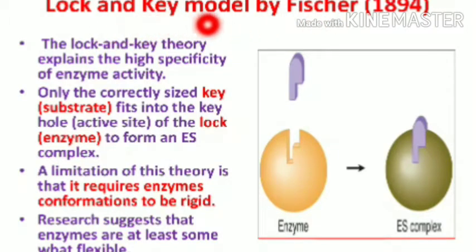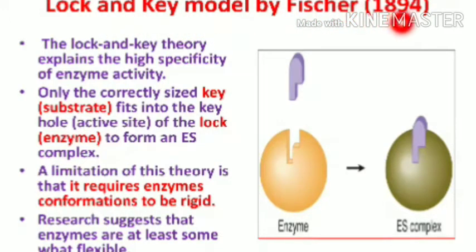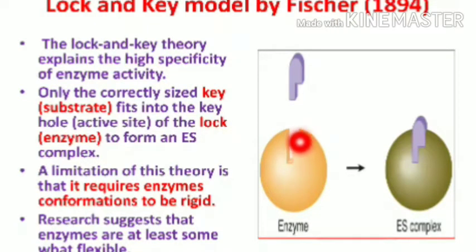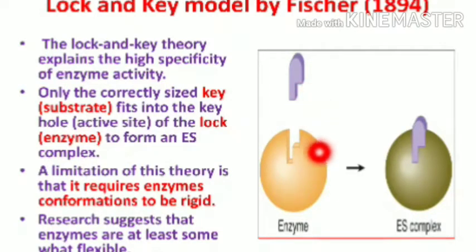The first mechanism or theory of enzyme action is the Lock and Key model by Emil Fischer. This model particularly insists upon the specificity of the enzyme and substrate. The lock and key theory explains the high specificity of enzyme activity towards the substrate — just as a key is specific for its lock, hence the name.